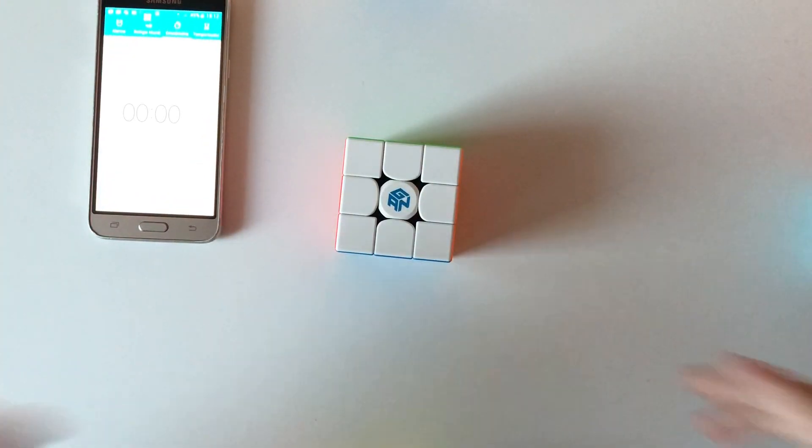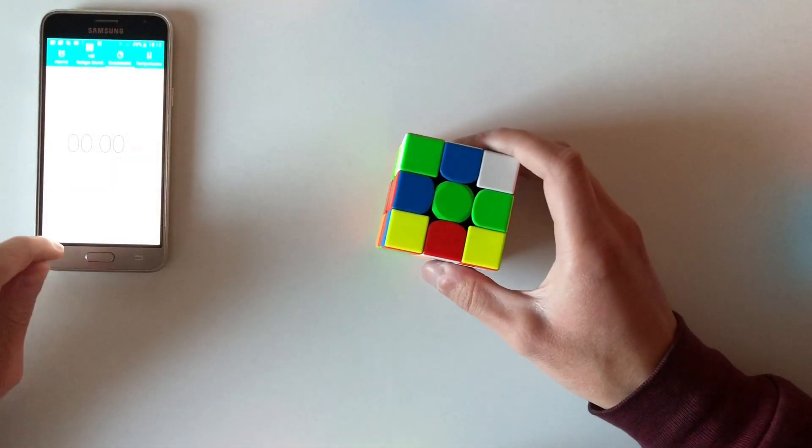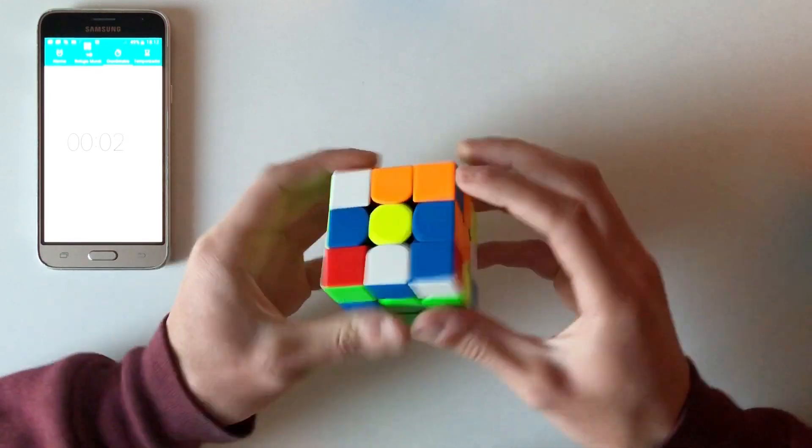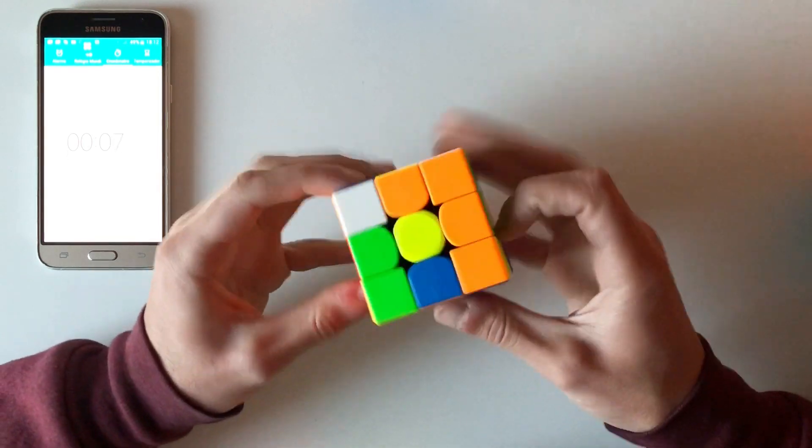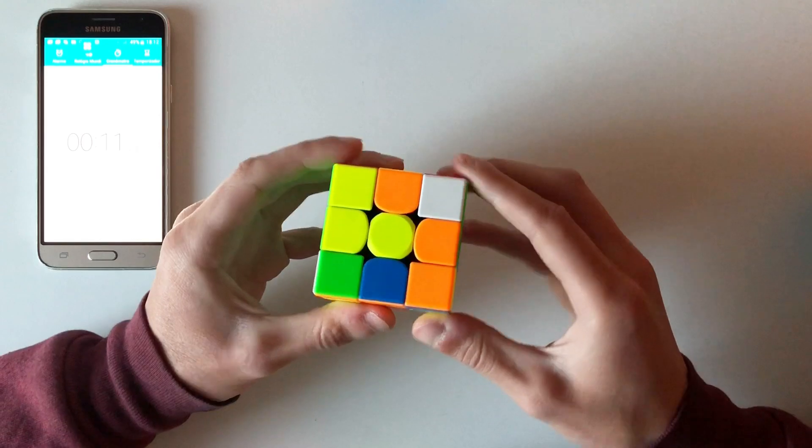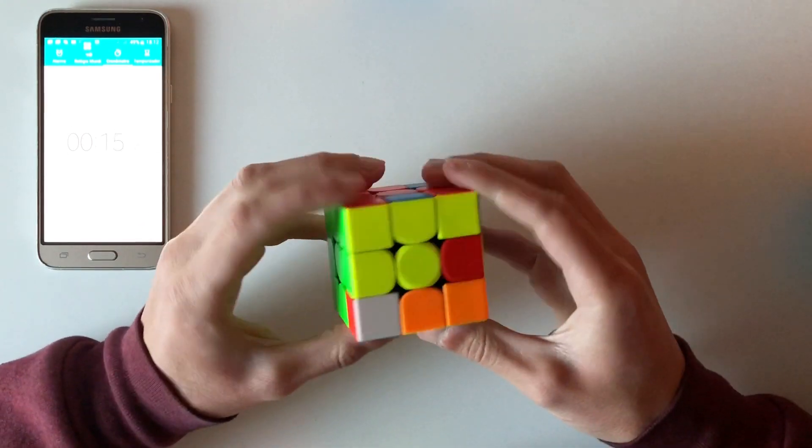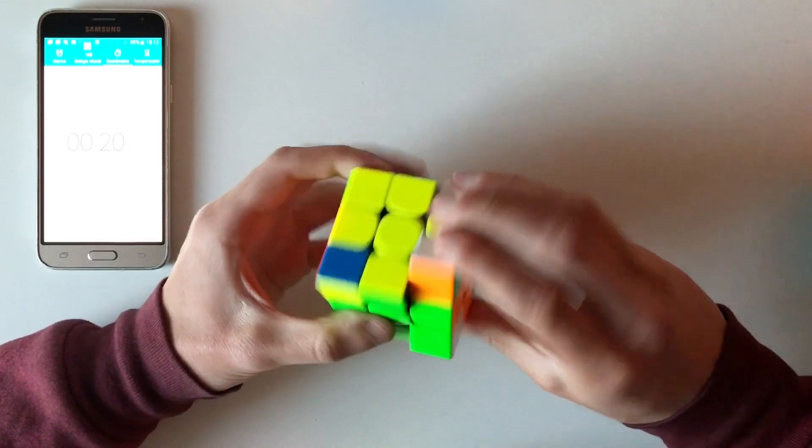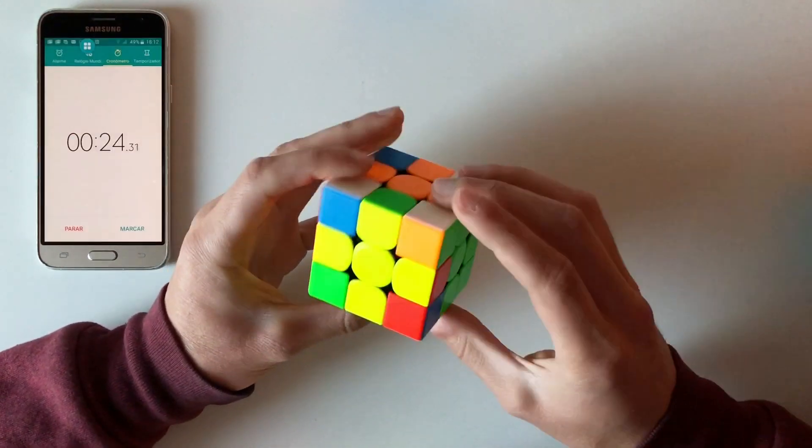Now let's see how fast I can solve the cube with this method. I'll scramble. One, two, three. Starting by the white cross, that's done. Now the other edges. Last edge. Okay. Now OLL. These two are opposite, so Sion. Now another Sion.